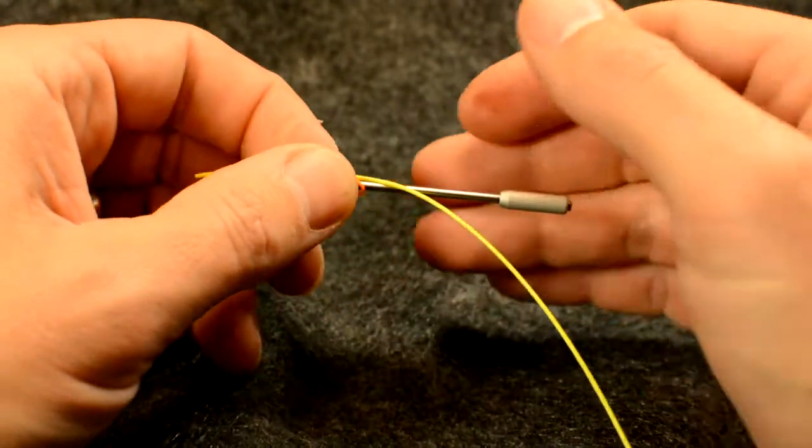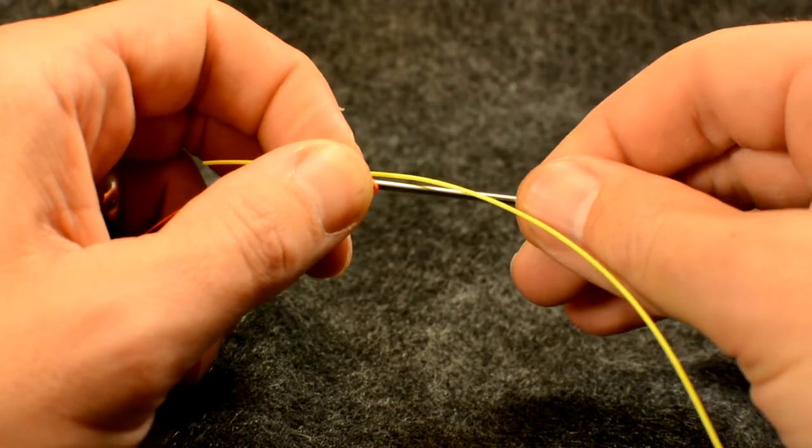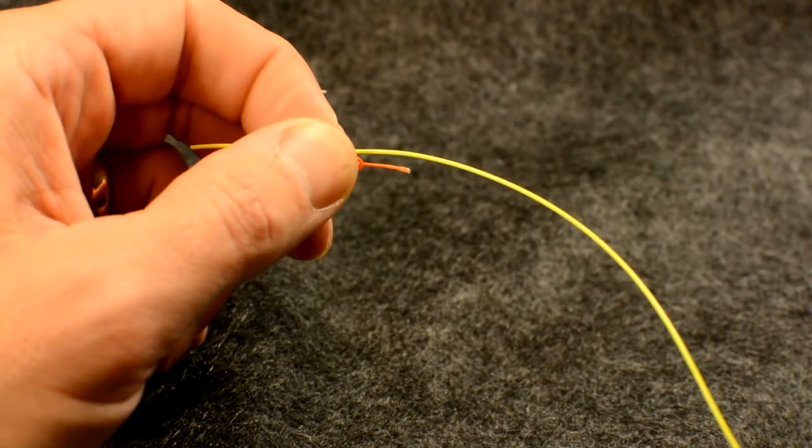Switch positions with your hands to secure the knot with your left thumb and forefinger and slide the tube out with your right hand.